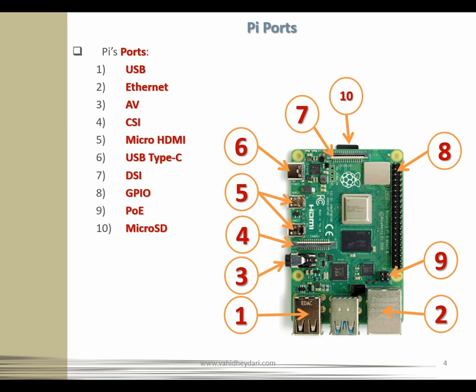The second type of port is the Ethernet port, or network port, for a wired network using cables. For those who are aware, it uses an RJ45 connector. The Ethernet port handles network connectivity, and there are two status LEDs at the bottom side of this port that let you know the connection is working.